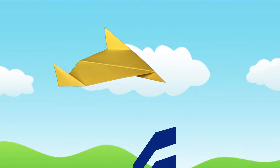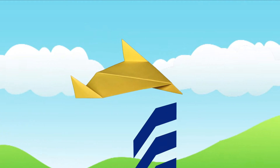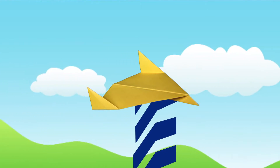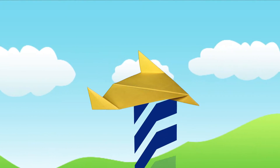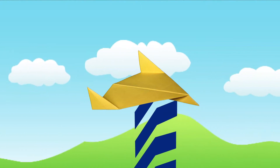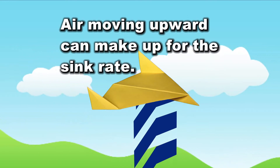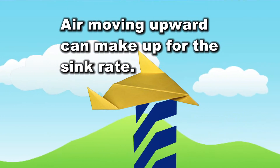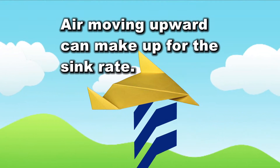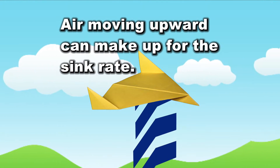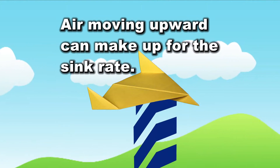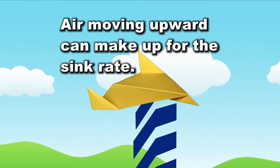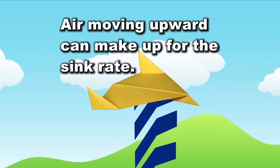What if a glider flies over air that's moving upward? The flat part of the wing gets pushed upward by the air. With enough upward push, the plane stops losing altitude. The updraft has made up for the sink rate. That's how hang gliders and buzzards stay in the air for hours — they find air moving upward and fly right there in that upward moving air.